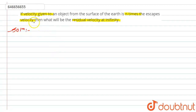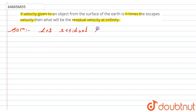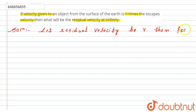The velocity given to an object from the surface of the earth is n times the escape velocity. We have to find the residual velocity at infinity. So let us assume the residual velocity to be v.